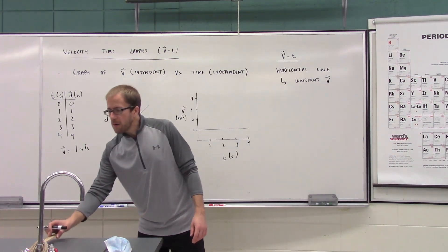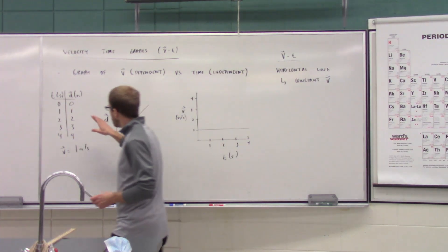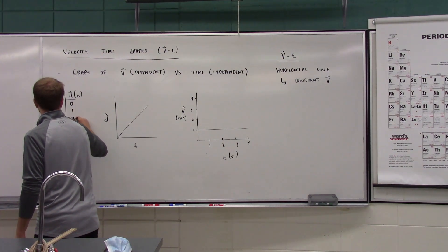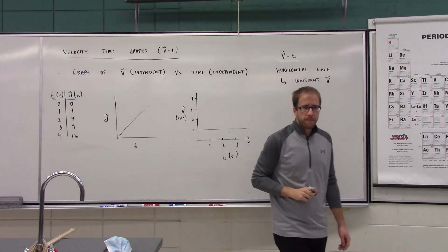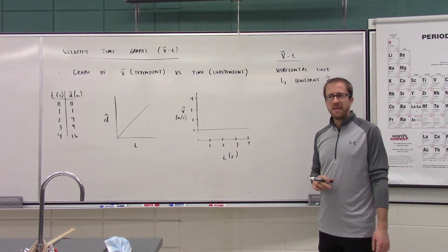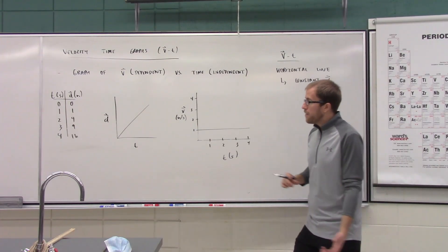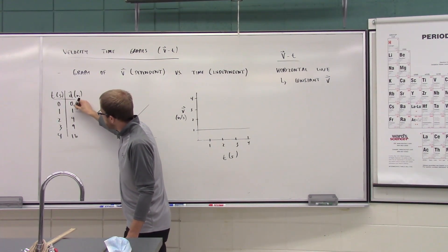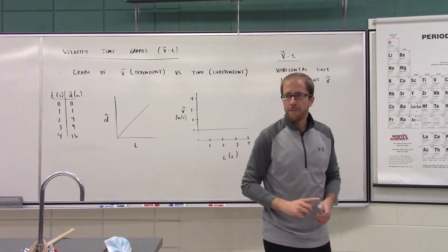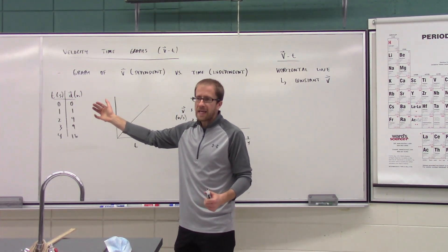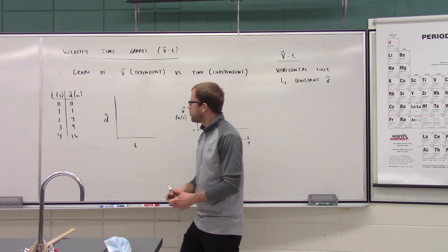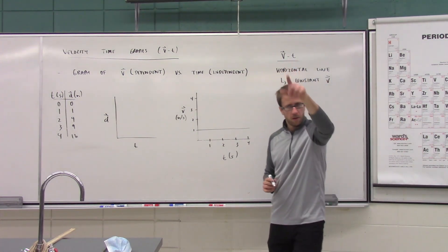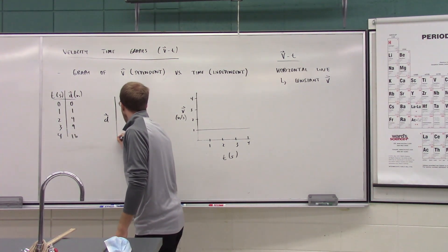Now let's use the data set for accelerated motion: positions 0, 1, 4, 9, 16. This object is speeding up — the amount of displacement change each second is increasing. On a position-time graph, if you plotted these points, the line would be curved.